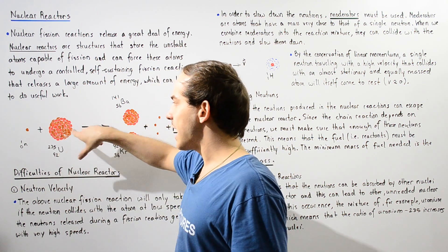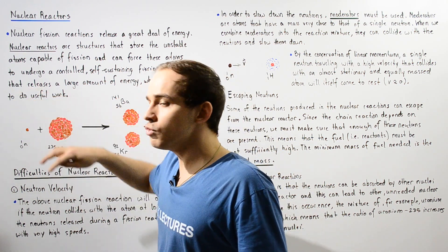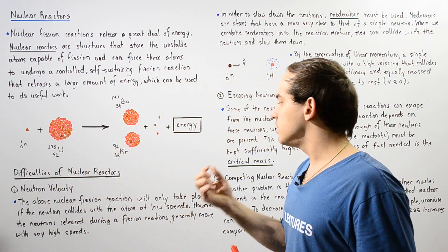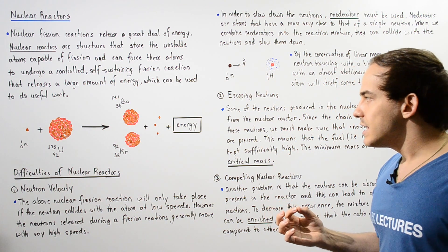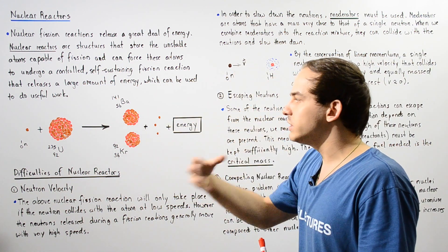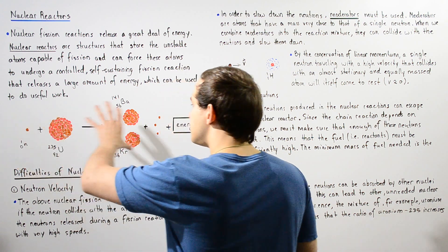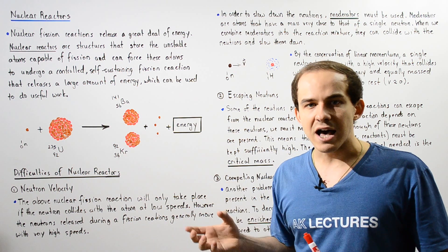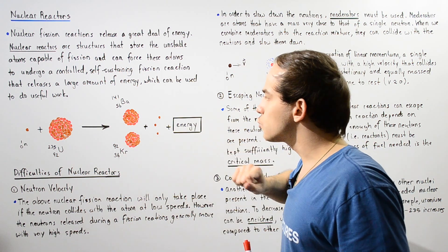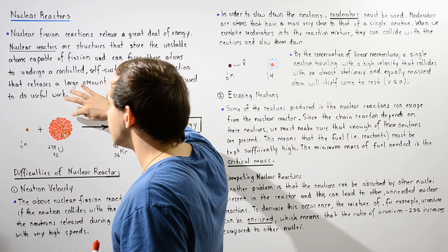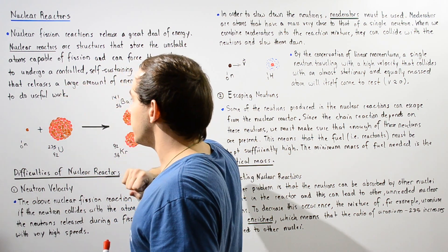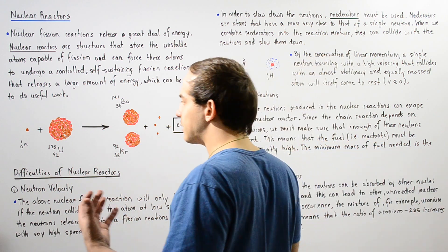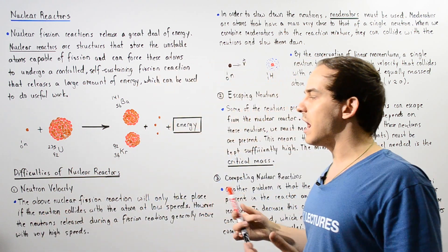In order for this reaction to actually take place, the neutron has to collide with the uranium-235 at a very low velocity. However, when these neutrons are released as a result of a fission reaction, they are traveling with very high velocities. When these neutrons travel with very high velocities and collide with the nucleus, that nucleus will not be able to absorb the neutron.